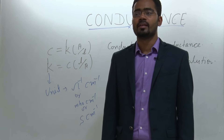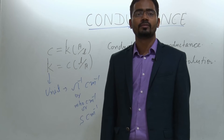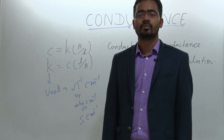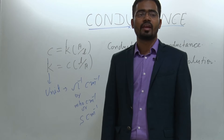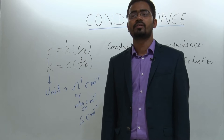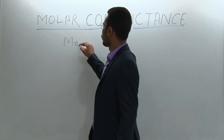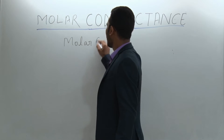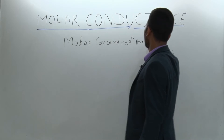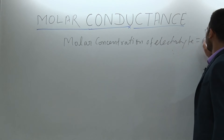Molar conductance or molar conductivity is the conductance of 1 mole of electrolyte which is contained between 2 electrodes having cross-sectional area equal to 1 centimeter square and length between the 2 electrodes is 1 centimeter. Let us assume the molar concentration of electrolyte is C.